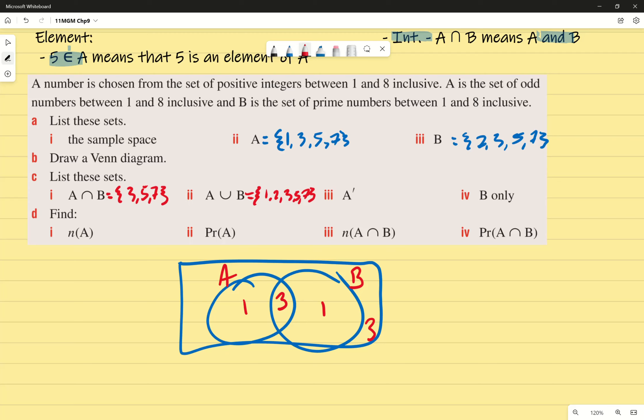A dash. Now, A dash, I think you guys already know this one from the last one. What does the dash mean again? Not A. Thank you very much. Complement, which means not A as well. So in this circumstance, not A would be given by two, four, six, and eight. Or in other words, the even numbers, because A was odd numbers.